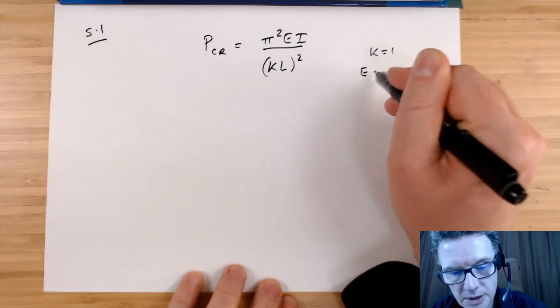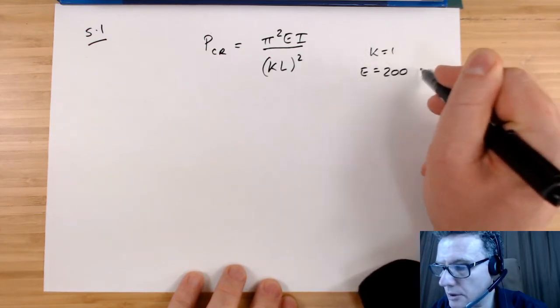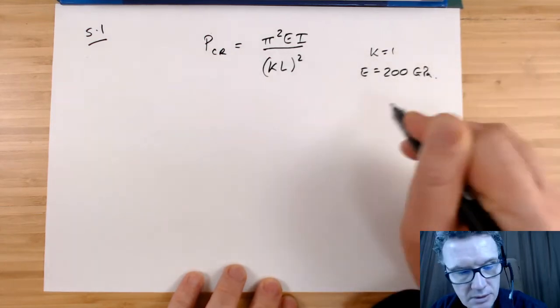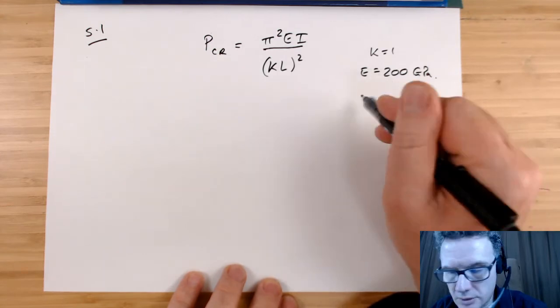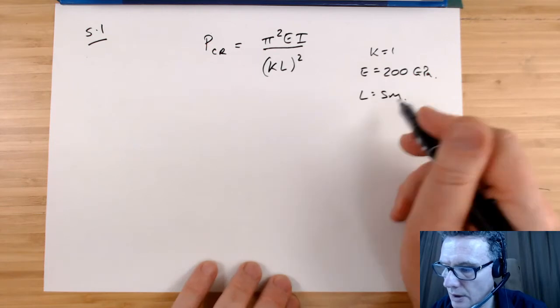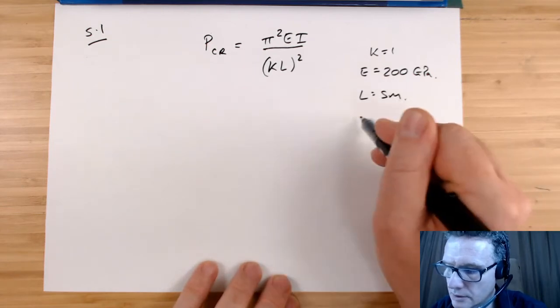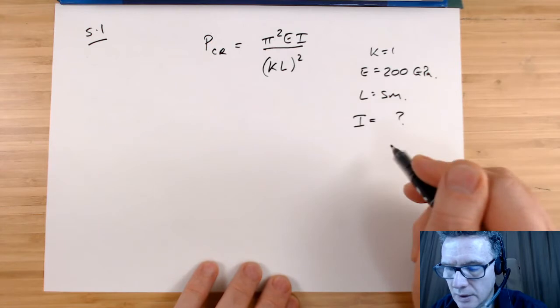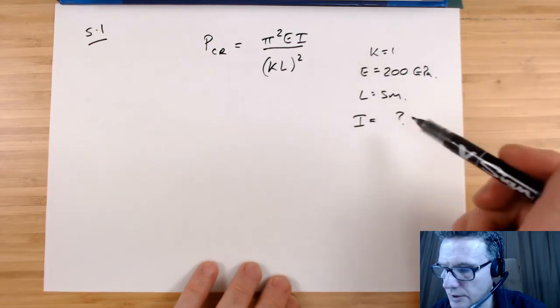E is 200 gigapascals. L equals five meters. I need to find I, the moment of inertia.